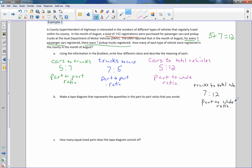Part B, make a tape diagram that represents the quantities in the part to part ratios that you wrote. Well, we're talking about cars and we're talking about trucks. And there were five cars. So here's one, two, three, four, five. Six, seven. So there's a tape diagram representing five cars to seven trucks.